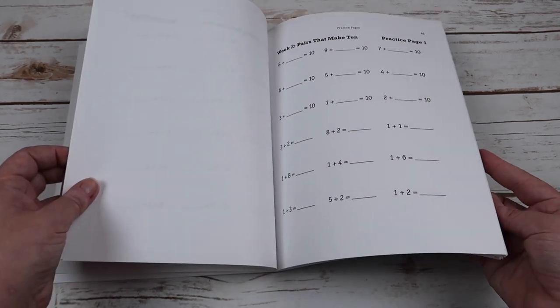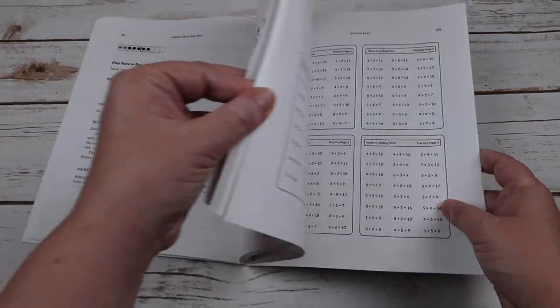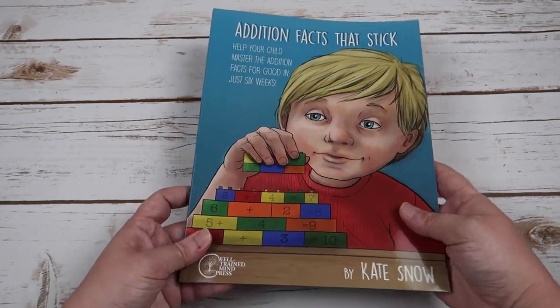And then again, like she said, the answers are in the very back. So it is very, very simple. All right, I'm going to go ahead and show you the table of contents in the subtraction. Again, they're set up the same.